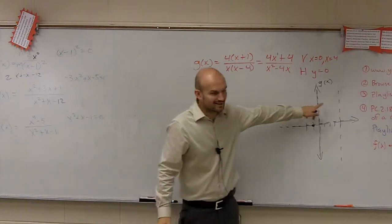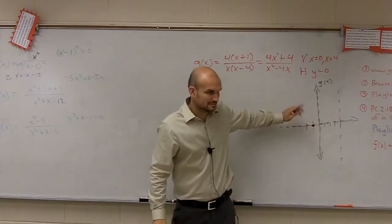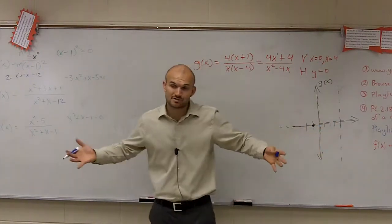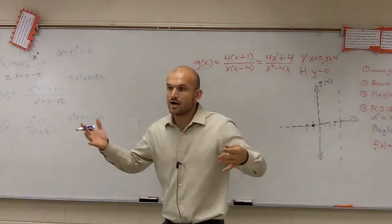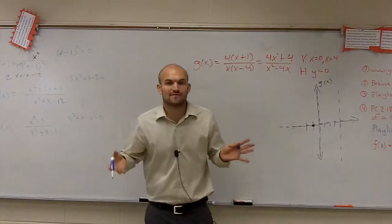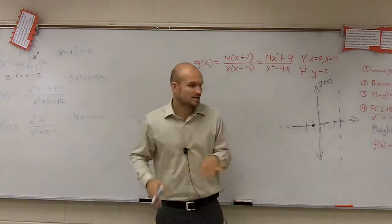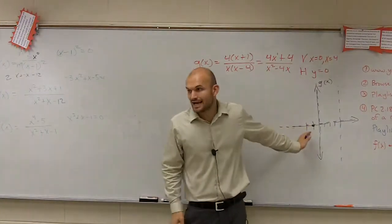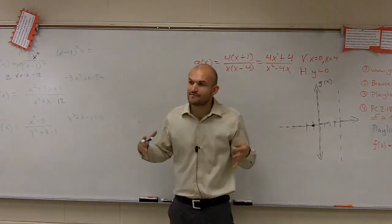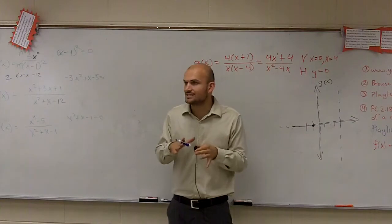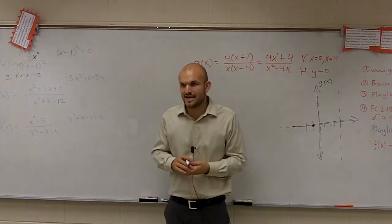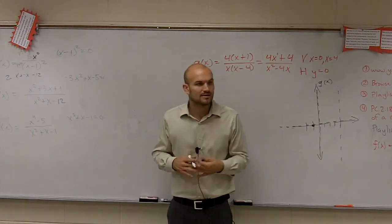So your graph looks something like this. These are your asymptotes. Remember, asymptotes are where your graph approaches. These lines are where your graph approaches as it goes to infinity and negative infinity.